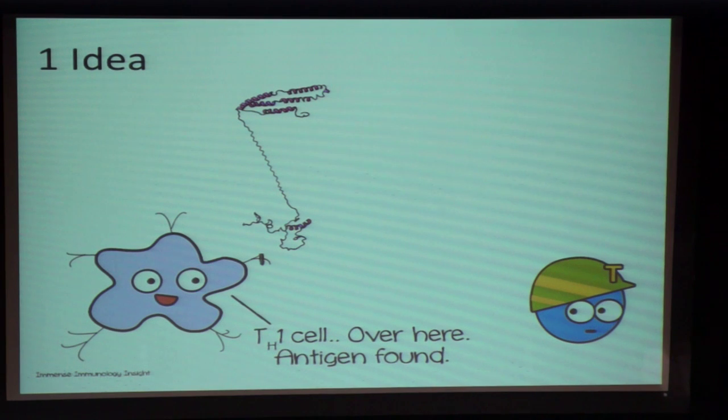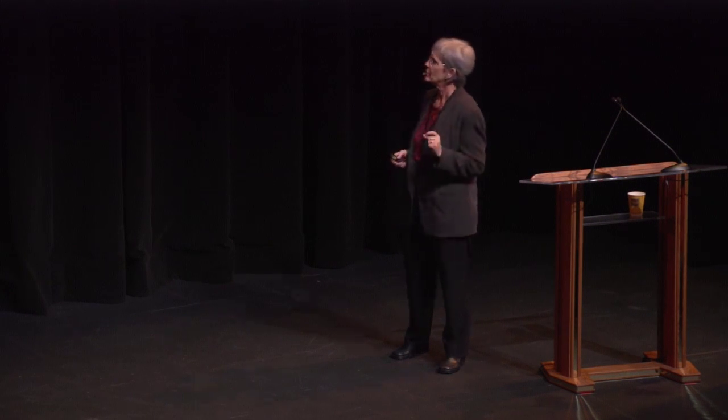The idea was a very simple one: cancer cells originate from self. They don't look foreign, necessarily, to the immune system. But they do have this continually multiplying, evolving number of mutations that produce abnormal proteins that could be recognized by the immune system if you just drew the attention of the immune system to them.